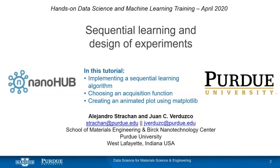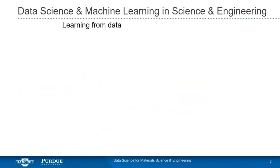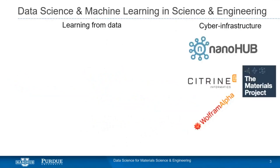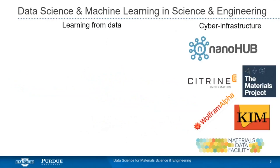So the entire workshop has been dealing with data science and machine learning — this is learning from data. We know that the first thing you need to learn from data is data. And over the last decade or so, there's been a big effort in cyber infrastructure development. We're all using Nanohub, which delivers online simulations, and we're getting data from queryable repositories. Data is easy to find and easy to mine.